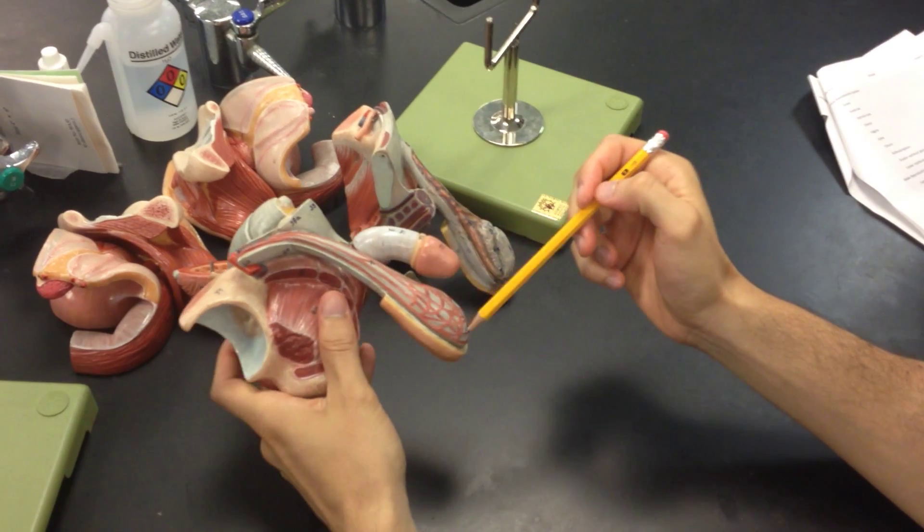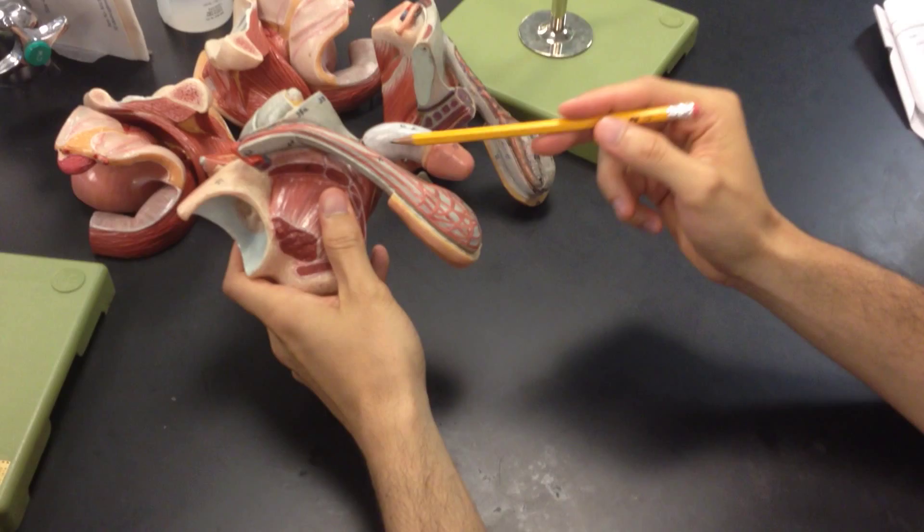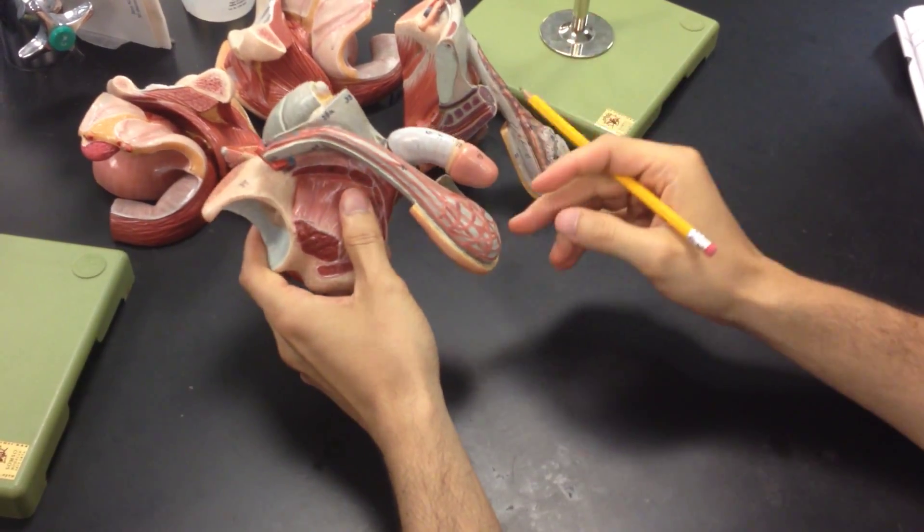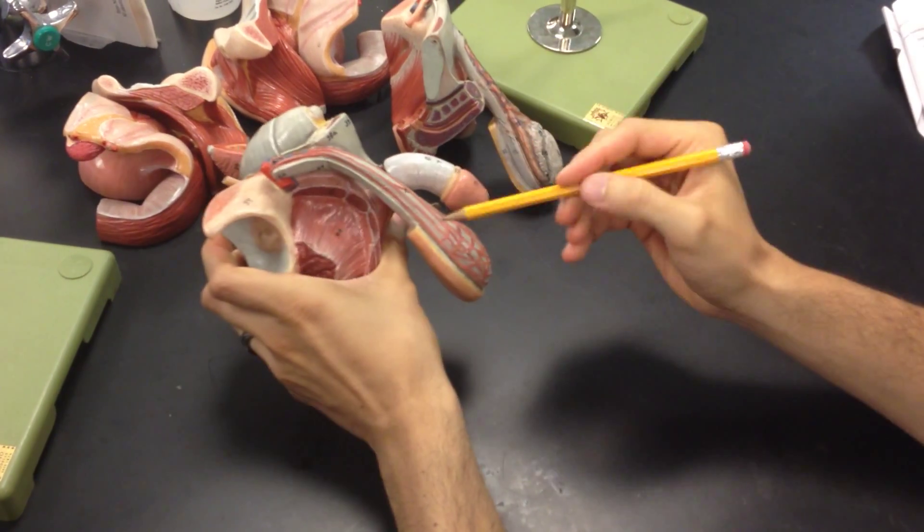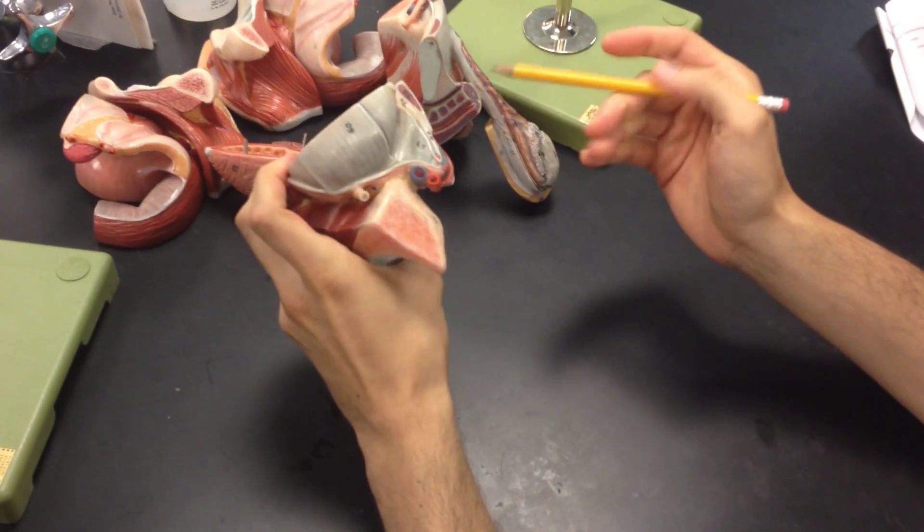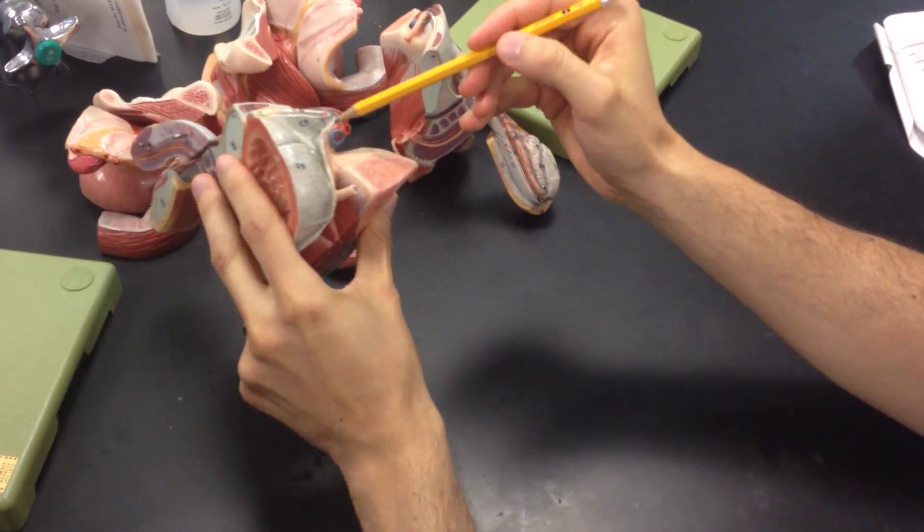This outer muscle here, that's going to be the muscle known as cremaster. You also have dartos but it's not pictured so I'm not going to worry about it. Cremaster is going to be the muscle on top here. Now going from there, the ductus deferens you could actually see come all the way through here as well.